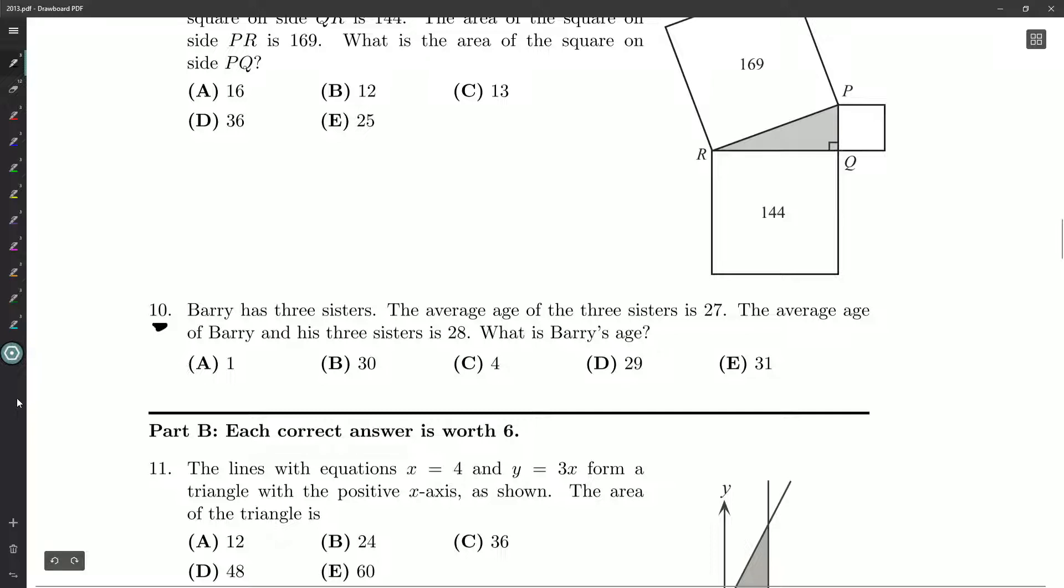Barry has three sisters. The average age of his three sisters is 27. The average age of Barry and his three sisters is 28. So the average went up by adding in Barry's age. I assume Barry's age is going to be above this 27. But we want to know what's Barry's age.